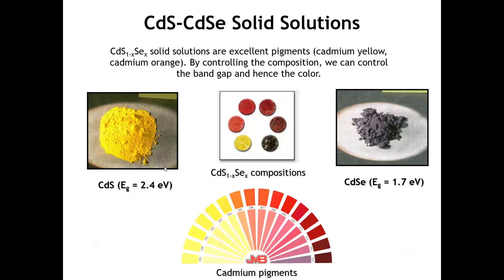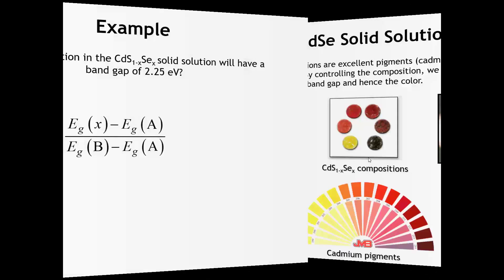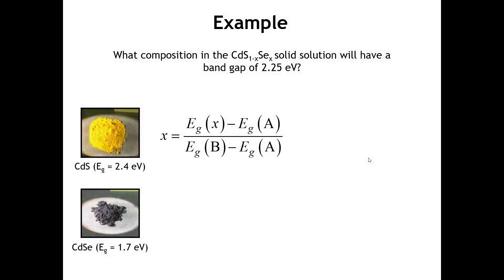Let's finish with an example. It turns out that solid solutions of cadmium sulfide and cadmium selenide make effective pigments. The color of the pigment can go anywhere from yellow through orange to red, and something quite close to black on the cadmium selenide-rich end. The usage of these pigments has declined significantly in recent decades due to concerns about the toxicity of cadmium. Pure cadmium sulfide has a yellow color, something just a little bit more yellow than cheddar cheese. Pure cadmium selenide is close to black. What happens if we want to make an orange pigment? The ideal band gap for orange is something pretty close to 2.25 eV. What composition do we need to make the band gap exactly 2.25?